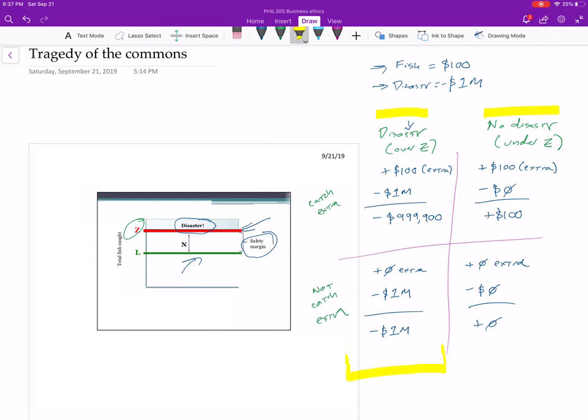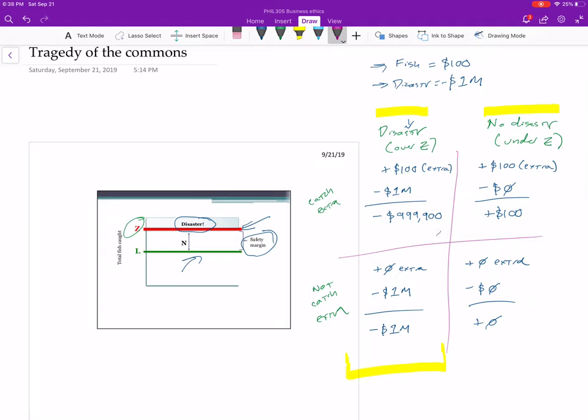In this situation, your options are either losing $909,900—you know what this says—and losing a million. A million is, of course, worse than losing that. So the best thing to do is to catch the extra fish.